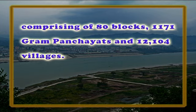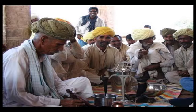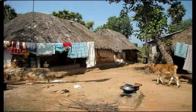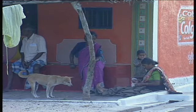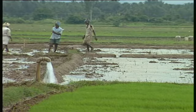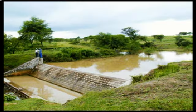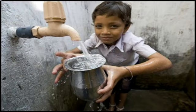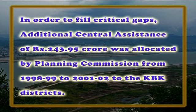Comprising 80 blocks, 1171 gram panchayats and 12,104 villages. This area has become the center of attention owing to high levels of poverty and consequent adverse effects on the quality of life of the people of this region. The plan consists of a central plan and centrally sponsored schemes in various sectors namely agriculture, horticulture, watershed development, afforestation, irrigation, health, drinking water, emergency feeding, welfare of SCs and STs, and rural connectivity. In order to fill critical gaps, additional central assistance of rupees 243.95 crore was allocated by the Planning Commission from 1998-99 to 2001-2002 to the KBK districts.